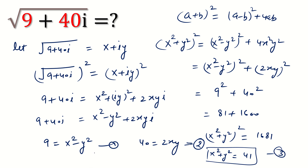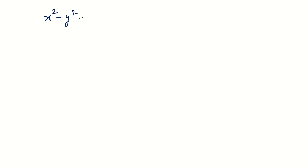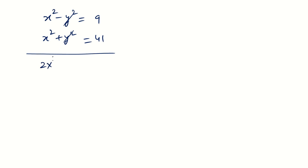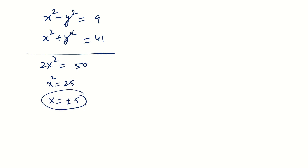From equation 1 and equation 3: equation 1 is x squared minus y squared equals 9, and equation 3 is x squared plus y squared equals 41. Adding them, we get 2x squared equals 50, so x squared equals 25, and therefore x is plus or minus 5.